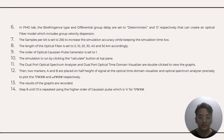The samples per bit is set to 256 to increase simulation accuracy while keeping simulation time low. The length of the optical fiber is set to 0, 10, 20, 30, 40, and 50 kilometers accordingly, and the order of the optical Gaussian pulse generator is set to 1. The simulation is run by clicking the calculate button. The dual-port optical spectrum analyzer and dual-port optical time domain visualizer are opened to view the graphs. Two markers A and B are placed at the half-height of the signal on both visualizers to record the TFWHM and Omega FWHM respectively. Steps 8 through 13 are then repeated using the higher order Gaussian pulse, which is order 4.